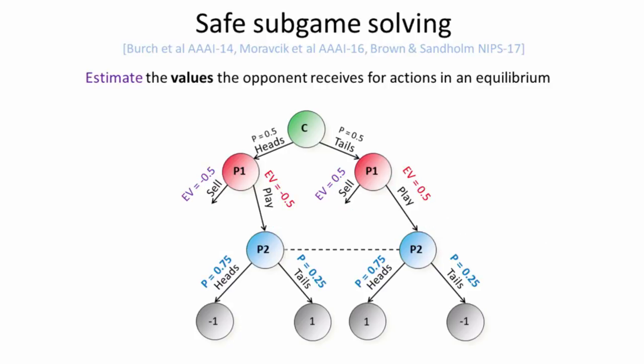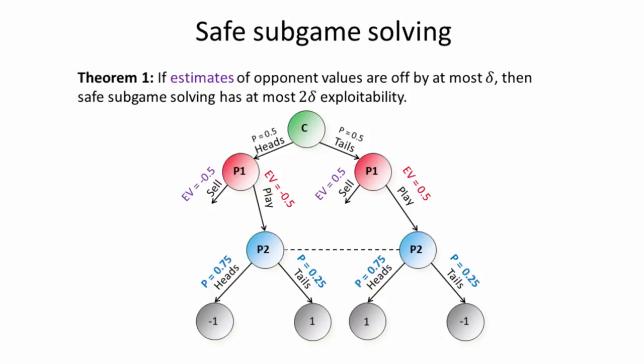What we do instead is called safe sub-game solving. This has been an area of research that has been developed over the past few years. The idea here is that we're going to estimate the values the opponent receives in sub-games. We're not going to make any assumptions about how they actually play. So for example, we can estimate the value of the sell action for player one. And we have a theorem that says if we are able to accurately estimate these values that the opponent, the values of the actions the opponent could take. For example, if these estimates are off by at most delta, then we can guarantee that our strategy has exploitability at most two delta using safe sub-game solving.